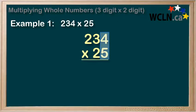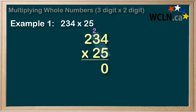5 times 4 is 20. We'll put the 0 here and carry the 2 — mark it up here to remind ourselves. Next, 5 times 3 equals 15, but we remember our extra 2, so 15 plus 2 is 17. We mark the 7 down here and carry the 1 to the 100 spot.